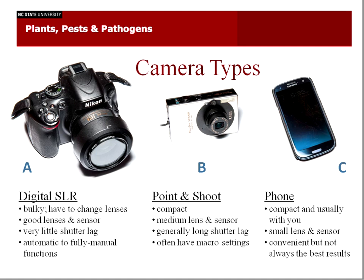One of the more popular ones are these typical point-and-shoot cameras, which are small and compact. They have medium lenses and sensors and generally a little bit longer shutter lag. They often have macro settings, which are especially useful for close-ups of diseases and insects. Many of the phones we have these days have very good cameras, and they're compact and usually with you. The problem is they have very small lenses and sensors, so it might be a little more difficult to get really good results, but they're convenient.